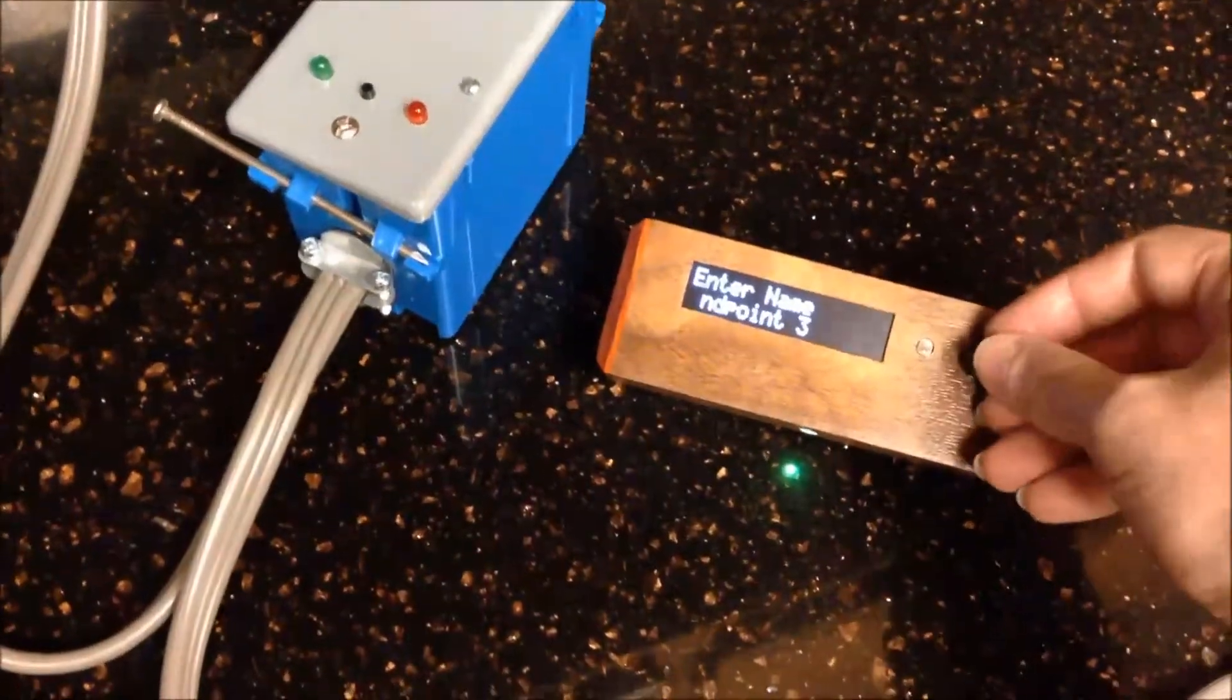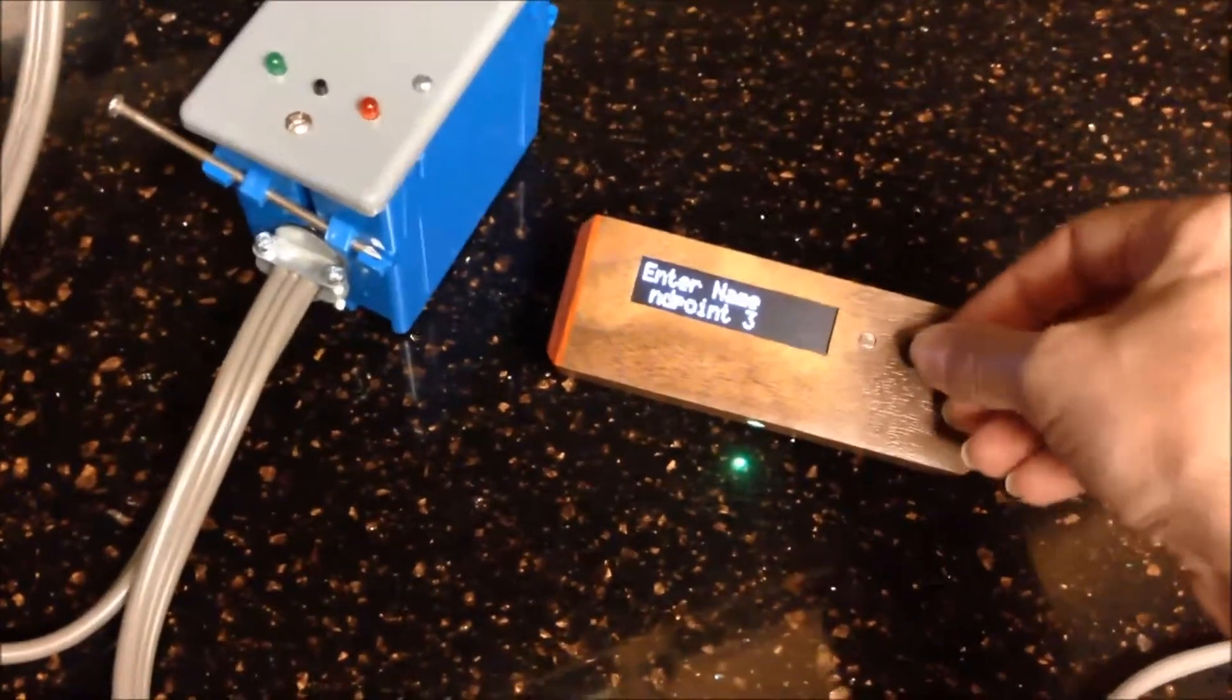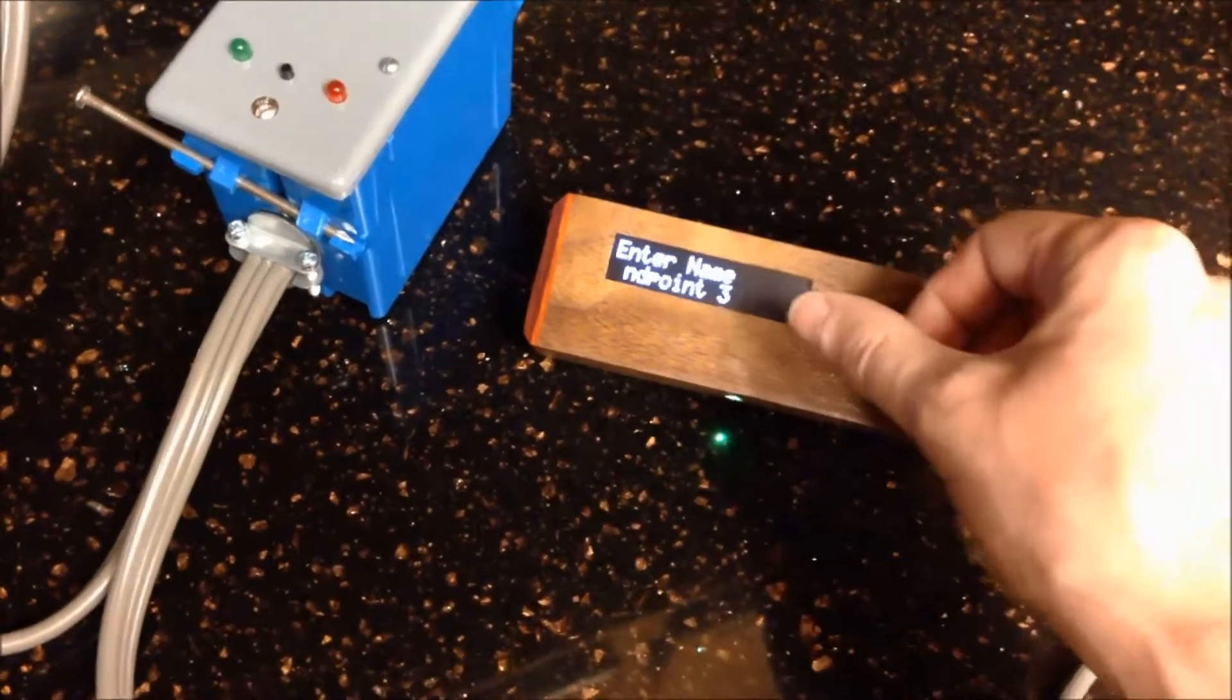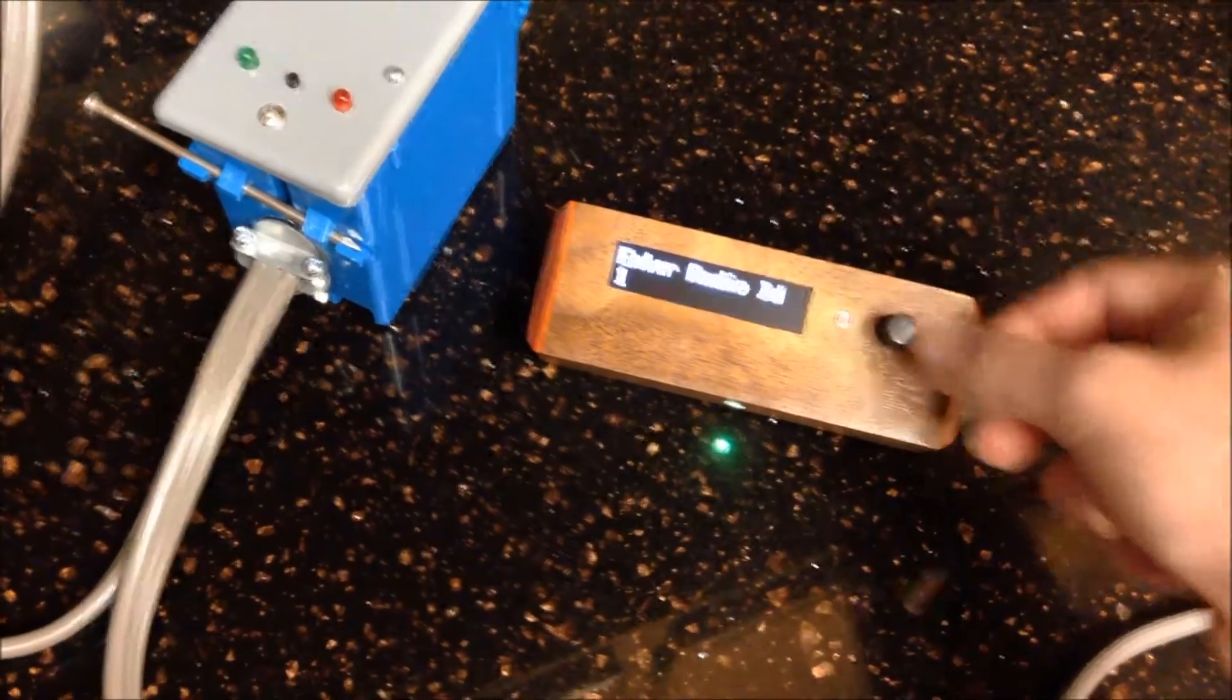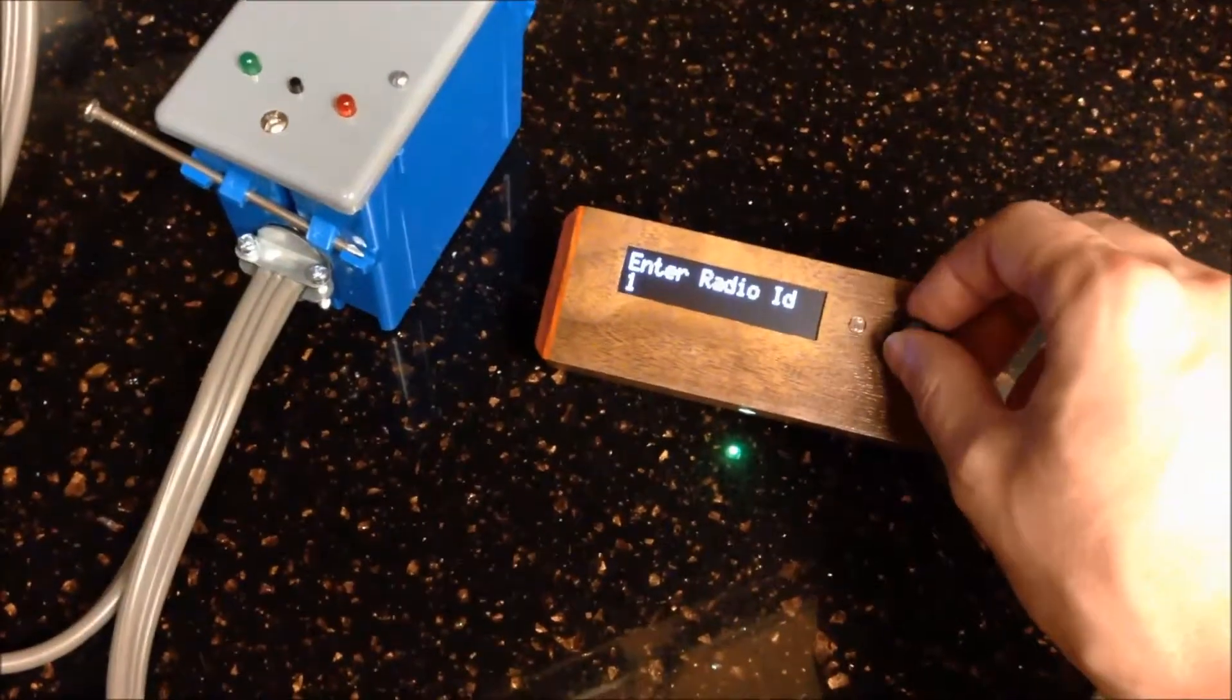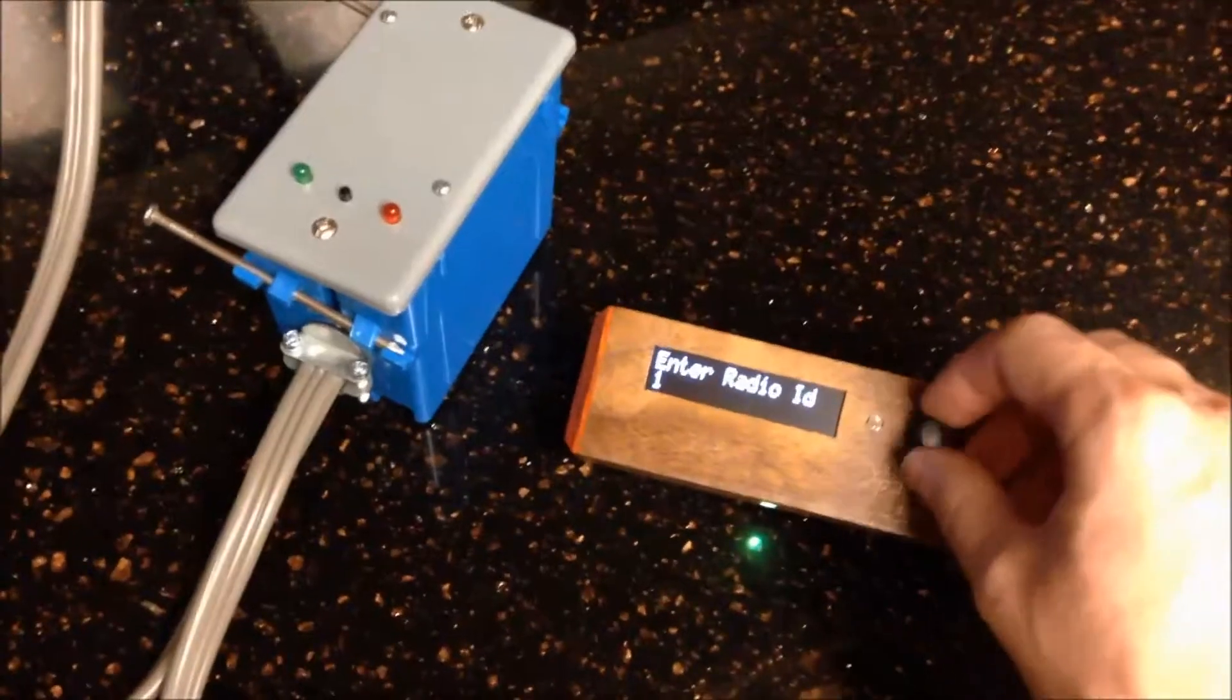If you just keep on clicking it'll keep on advancing, and once it gets to the end it'll just wrap around to the front again. To finish editing the name you do a longer click, you hold it down for half a second and then it goes to the next setting that you have to adjust, and that's the radio ID.